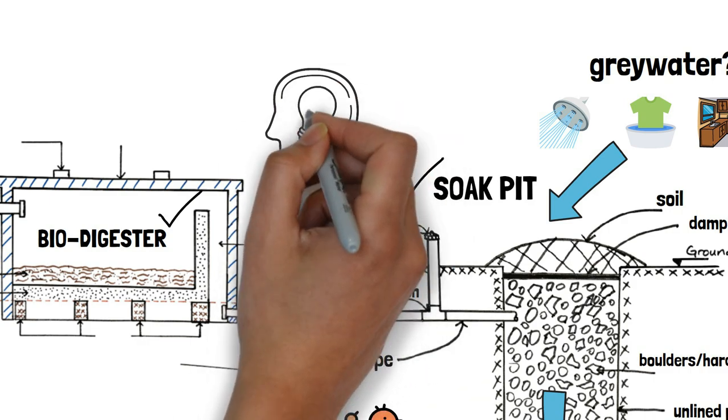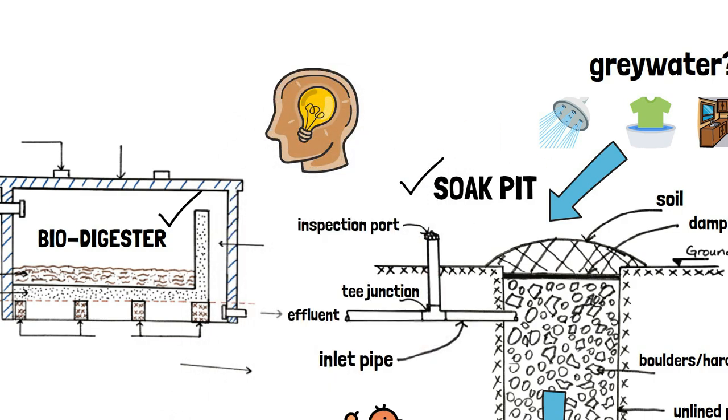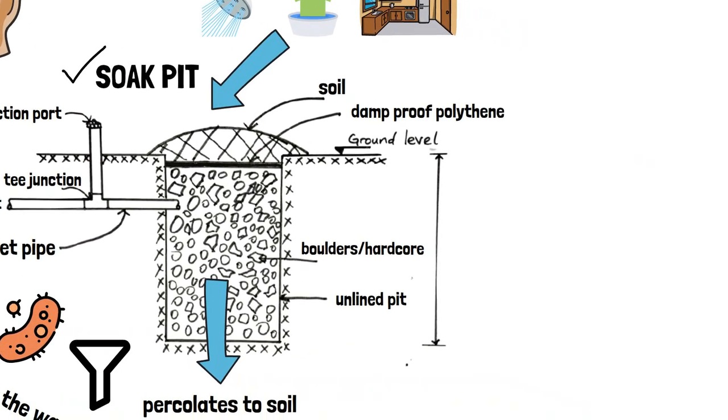The depth of the soak pit varies depending on the soil's infiltration rate, number of users and depth of the ground water table. But it should be a minimum of 1.2 meters deep.